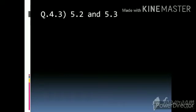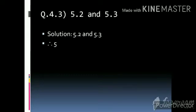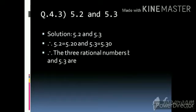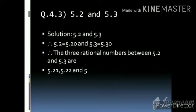Question number 3: between 5.2 and 5.3. We have to write three rational numbers between these two. We take one extra zero: 5.2 = 5.20 and 5.3 = 5.30. Between 20 and 30 we get 9 rational numbers; you can write any three. Therefore the three rational numbers between 5.2 and 5.3 are 5.21, 5.22, and 5.23.